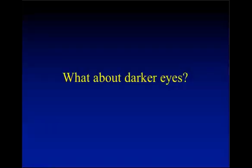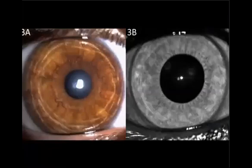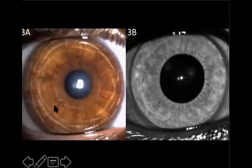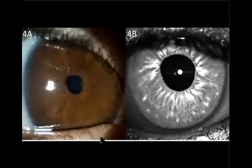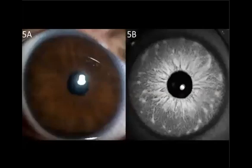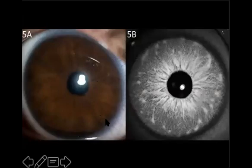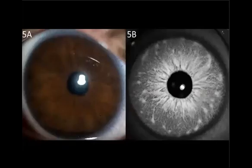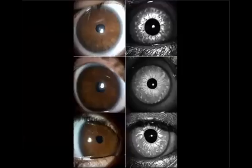But what about the darker eyes? We begin to see some differences — we can see some Brushfield spots that we would have missed otherwise in regular light. And in a darker iris yet, we see Brushfield spots much more clearly that we would have missed on regular slit lamp examination. And in a darker eye still, we cannot detect any Brushfield spots in ordinary white light, but with near-infrared light can make them out quite easily. In other words, the darker the eye, the bigger the difference between white light and infrared light illumination, as we see here in these patients with Down syndrome.